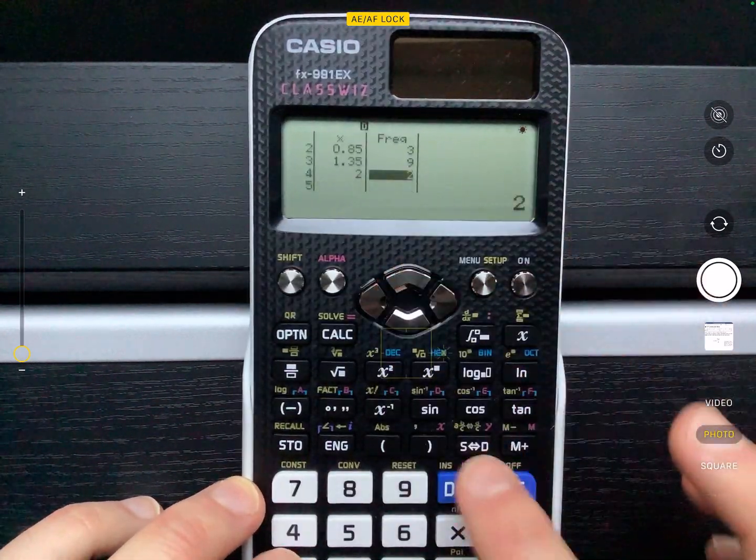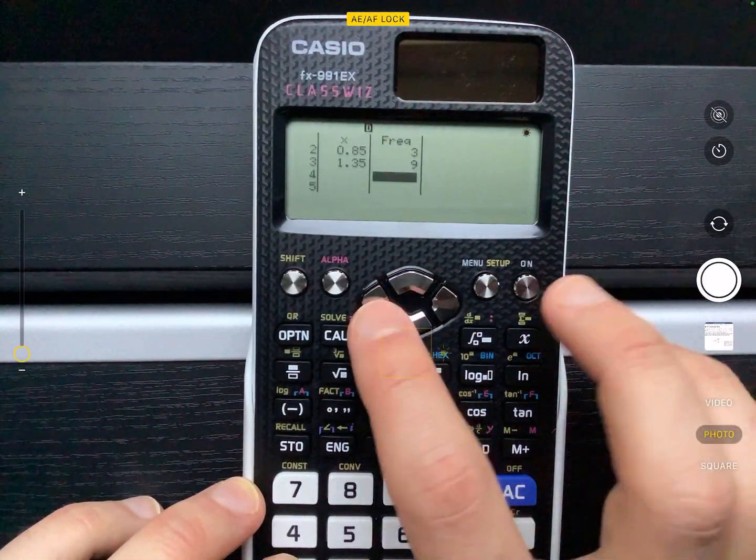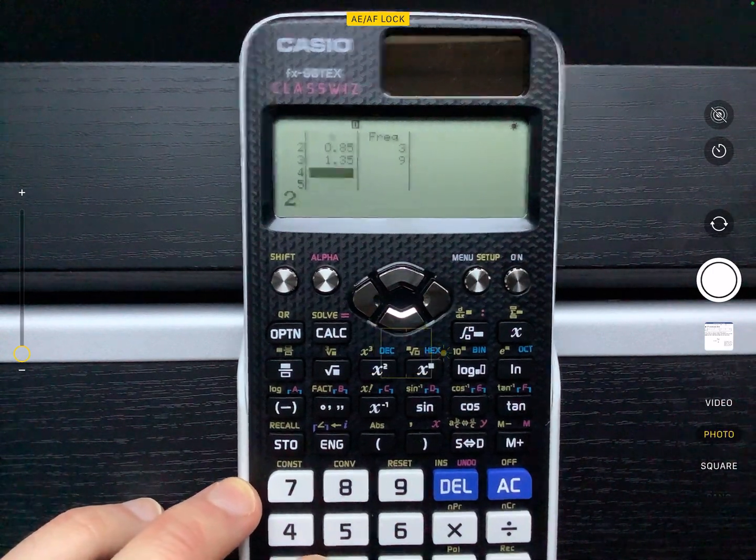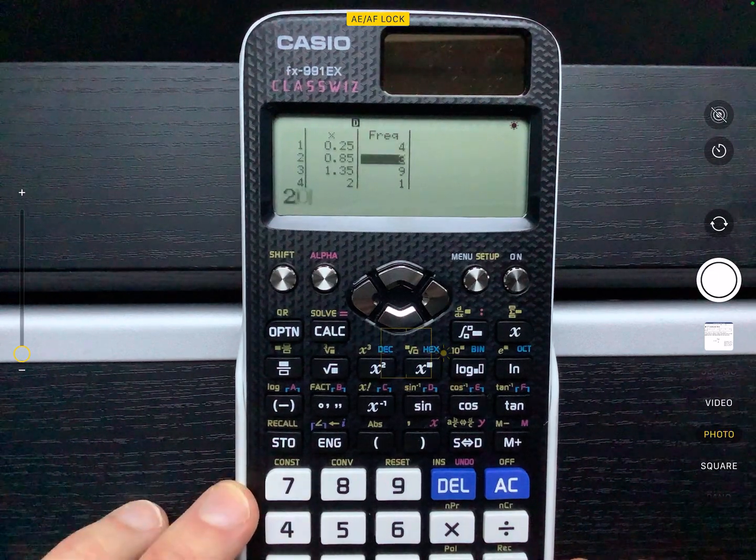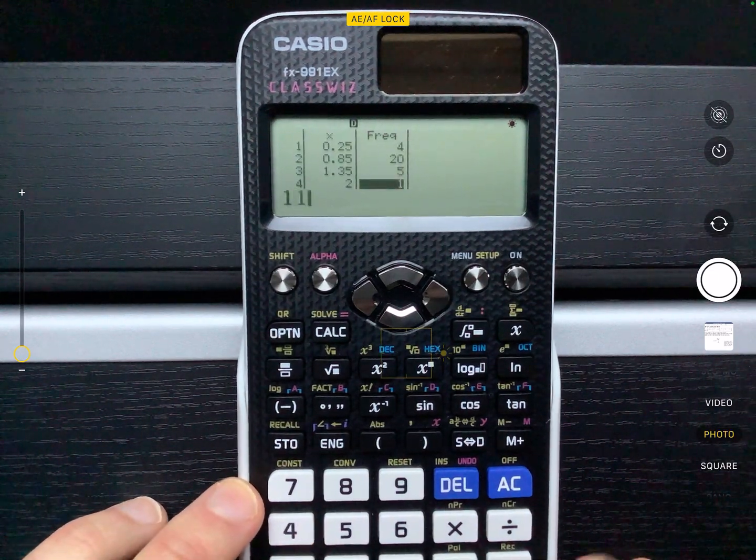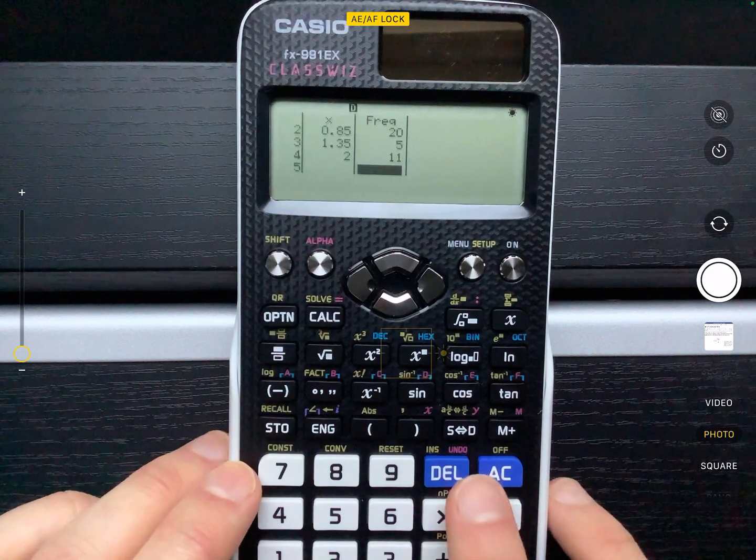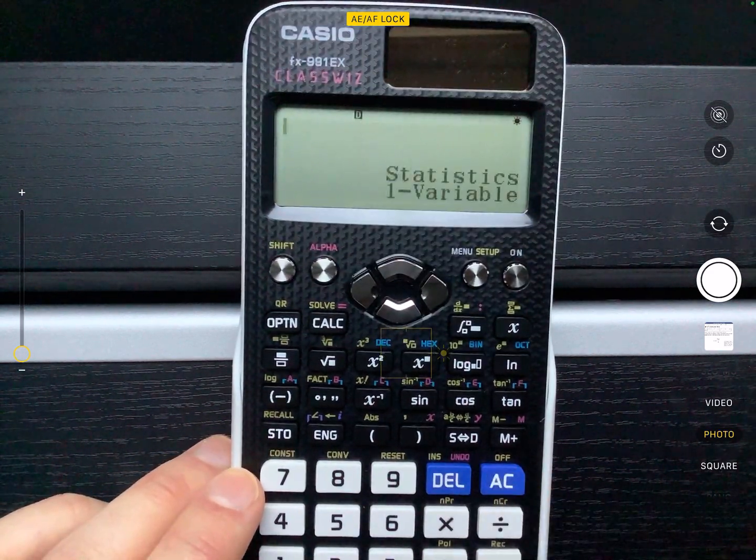And if you ever need to delete any of them, I think you can just press delete and it will completely go like that. So I'm just going to put the 2 back in there. Let's change the frequencies. So the frequencies are 4, 20, 5, and 11. And I'm going to press AC so that data is then stored.